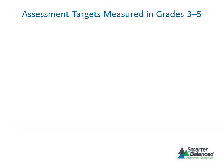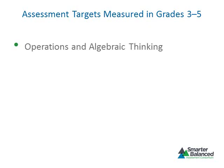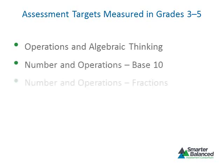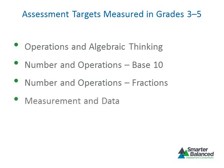Assessment targets for Claim 1 are based on the cluster level headings from the Common Core State Standards, taking into account ways the standards tie supporting clusters to the major work of the grade. For grades 3 through 5, there are five categories of assessment targets: Operations and Algebraic Thinking, Number and Operations in Base 10, Number and Operations with Fractions, Measurement and Data, and Geometry. Let's look at the progression of knowledge and skills measured for each assessment target across grades 3 through 5.